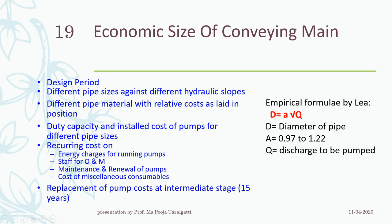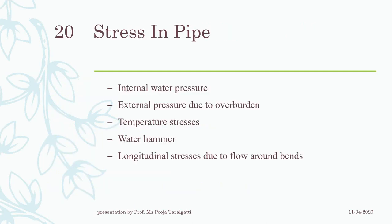For calculation, the empirical formula by Lee gives the main diameter as D = A × √Q, where Q is the discharge. This is how you can go for the calculation and consideration of the economic size of the conveyance main.